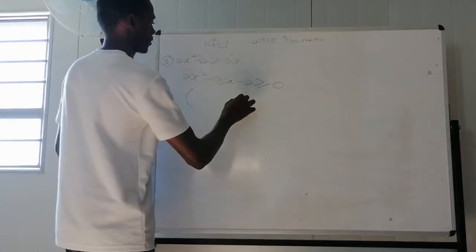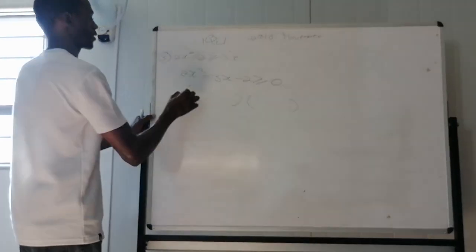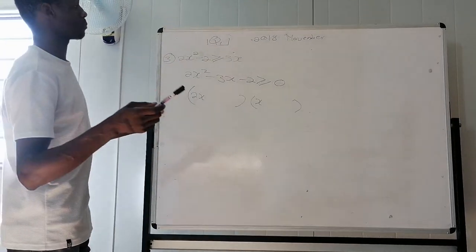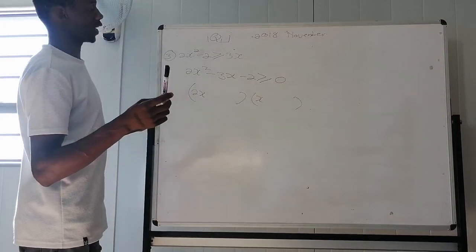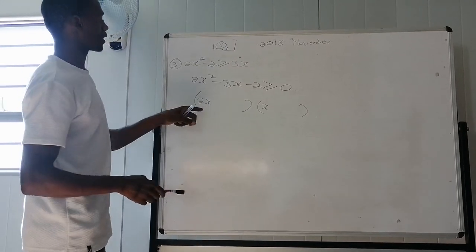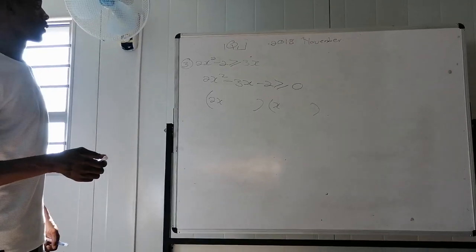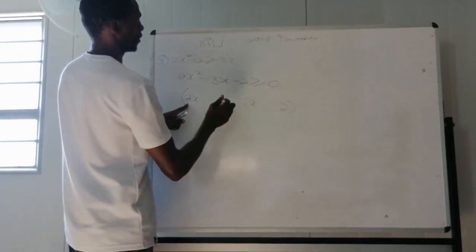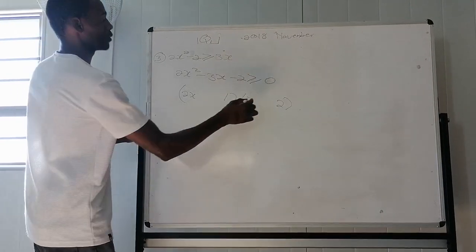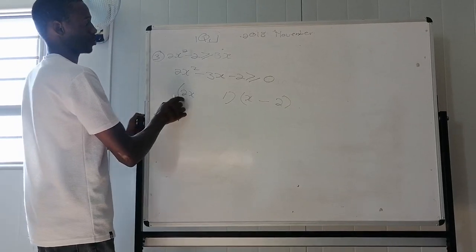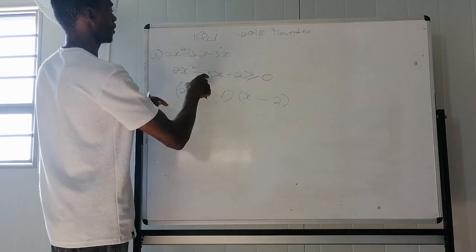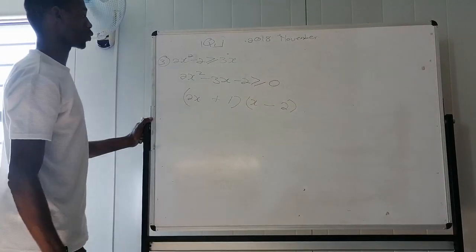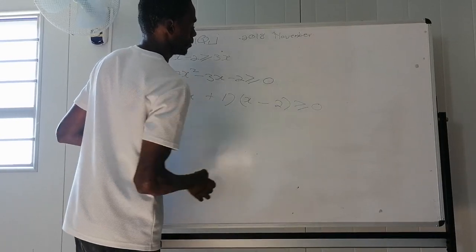From there we factorize. So it's 2x and x. Now we are looking for two numbers which we're going to multiply them and give us negative 2. Then when we add them, they must give us negative 3. But remember, there is 2 on the side. So if I put the 2 here, 2 times 2 is 4. Then 4 minus 1, I get my 3 here. Which means this one must be negative because my 3 is negative.